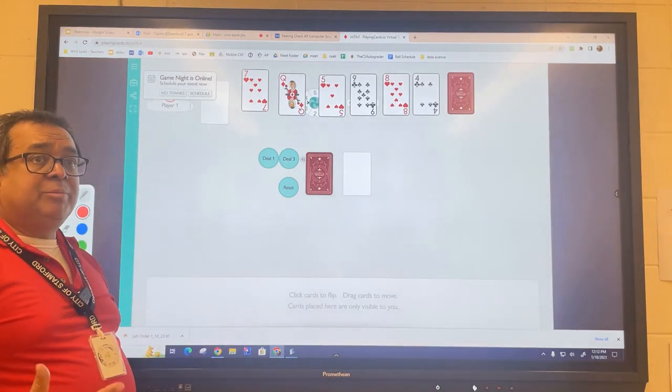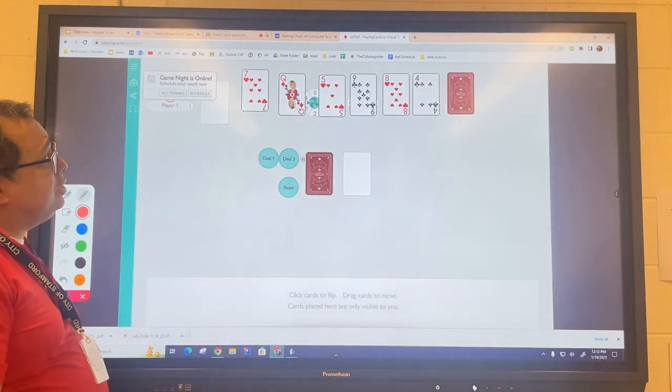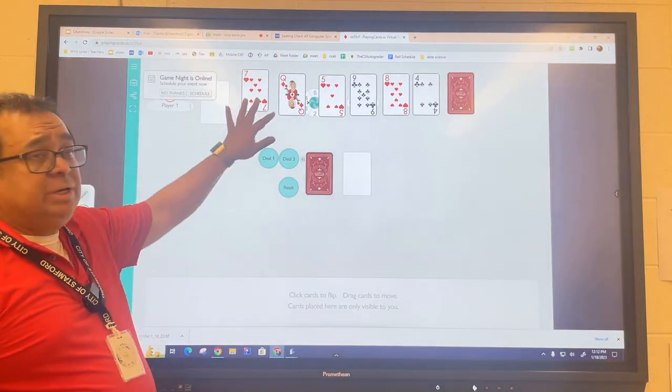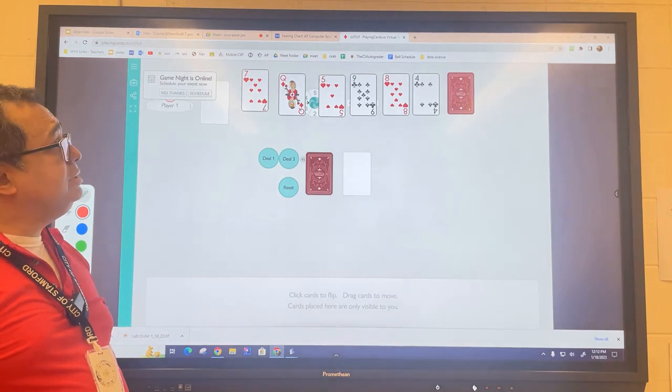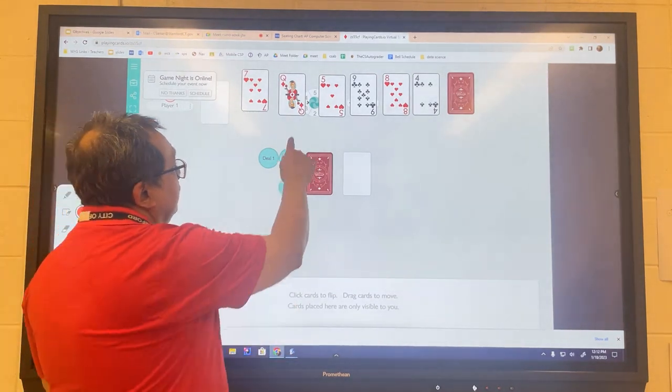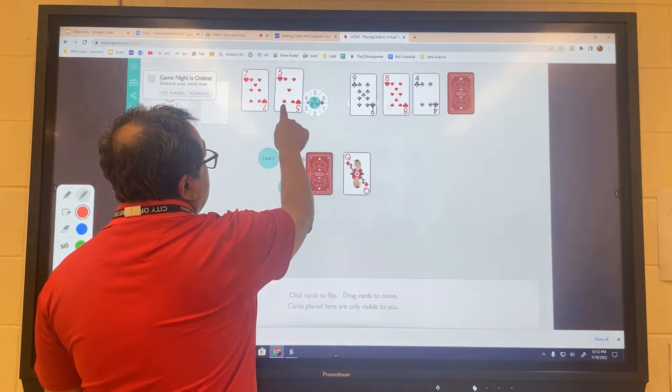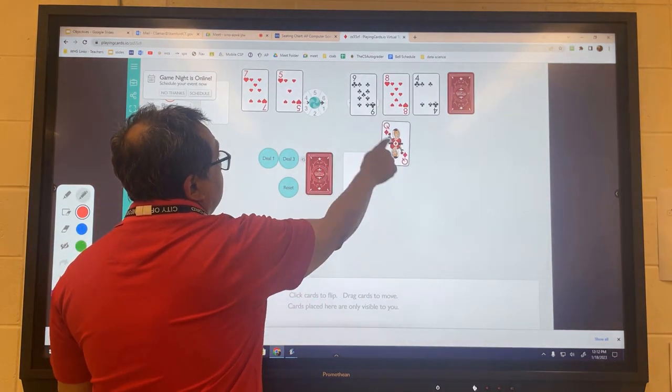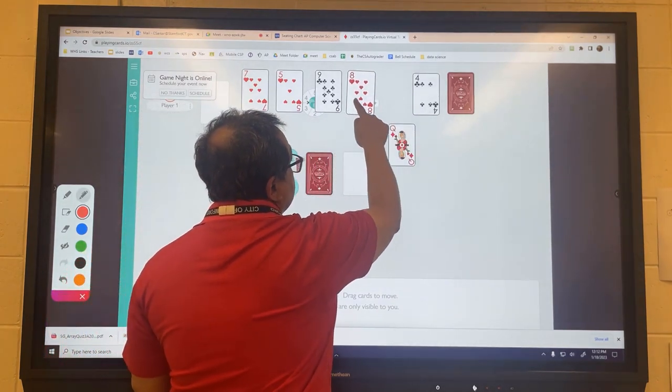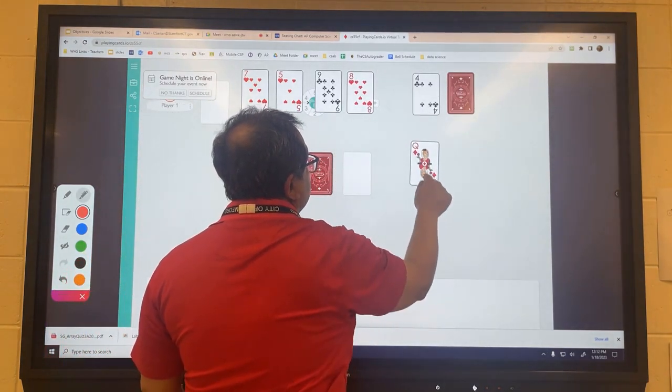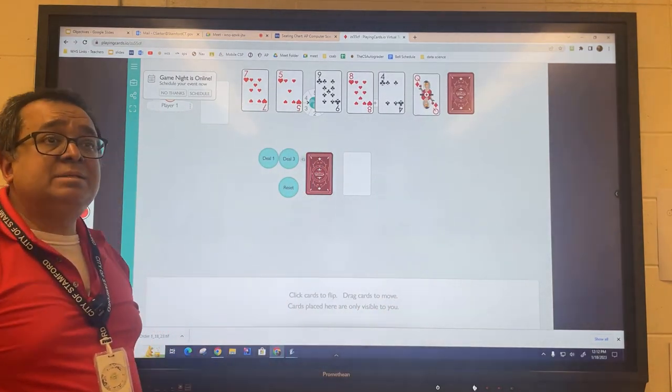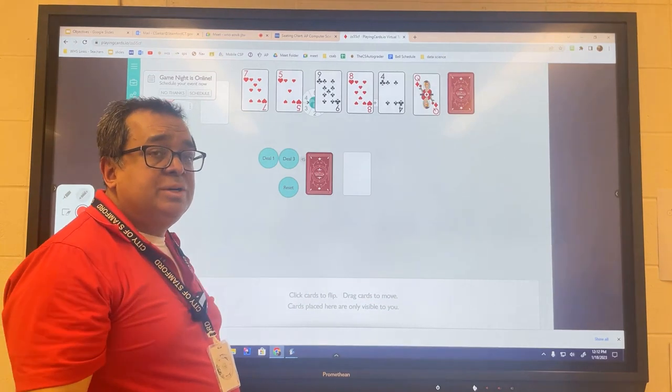Now I'm going to repeat the process. I'm going to ask: is the queen bigger than the seven? It is, so I don't need to swap those cards. Is the five bigger than the queen? No, so now I have to swap those cards. Then I compare these two and I swap them. I compare these two, I swap them. I compare these two, I swap them. Now I finished the second pass and two cards are now guaranteed to be sorted.